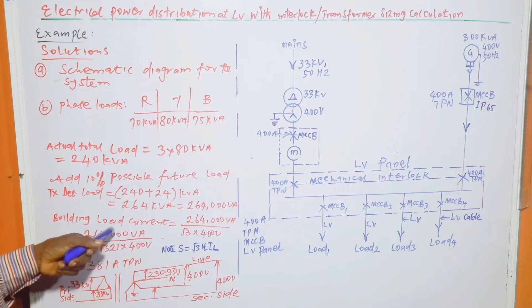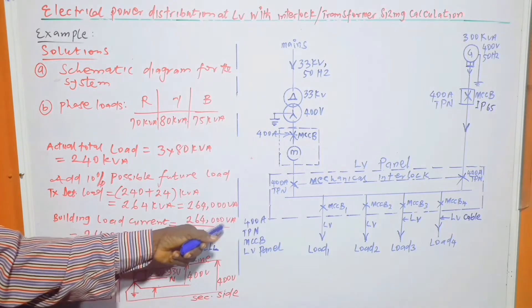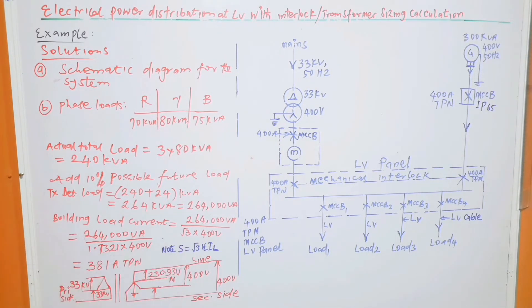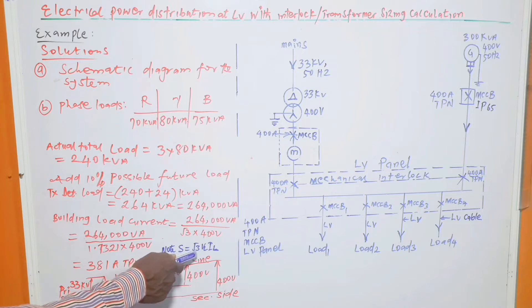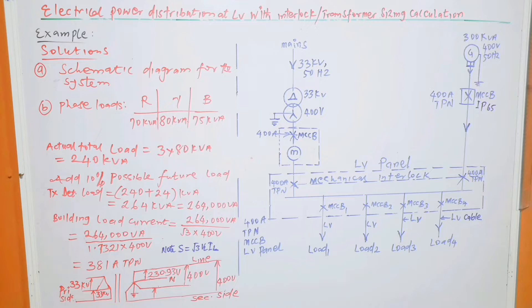Then we can move further to calculate the line current, the building load current, which is equal to 264,000 VA divided by root 3 times 400 V. From this formula, the apparent power is equal to root 3 times V line times I line, from which we calculate the I line to be equal to 381 ampere three-phase with neutral. In this case, it doesn't mean that the neutral current is 381, we are just saying that we have three phases plus neutral. It is the line current, which is equal to the phase current in this situation.